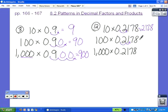we move the decimal two times. That gives us 21 and 78 hundredths.